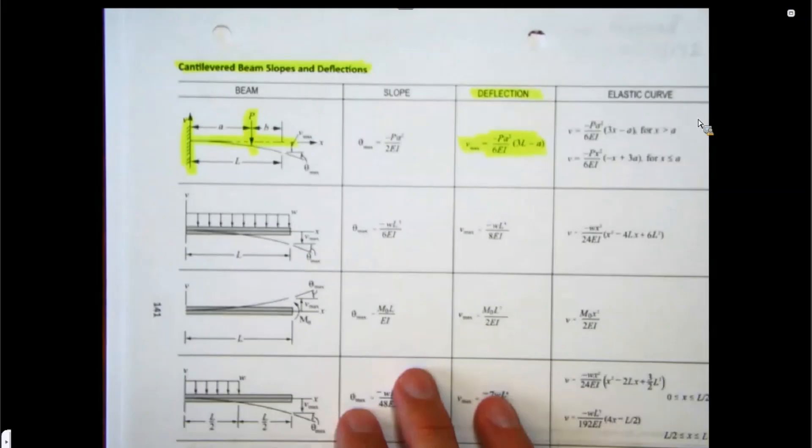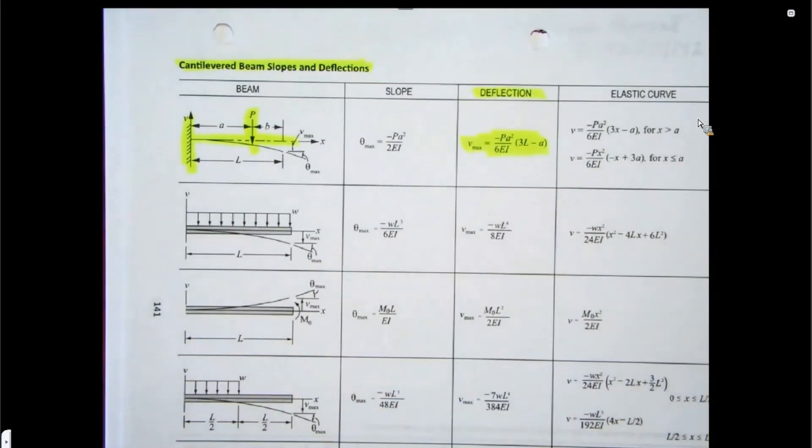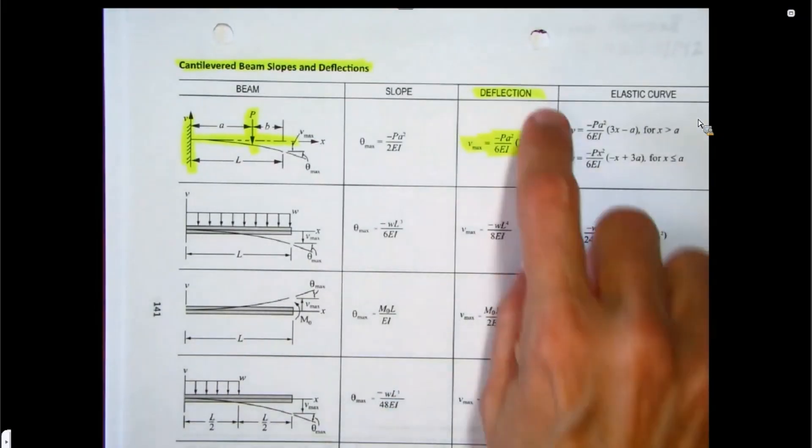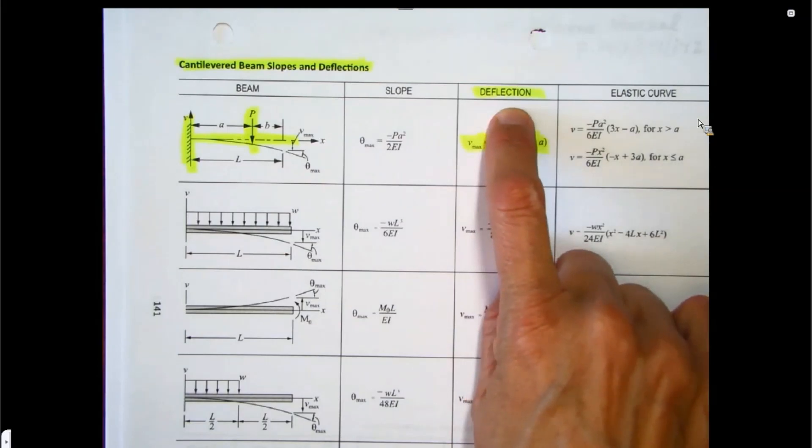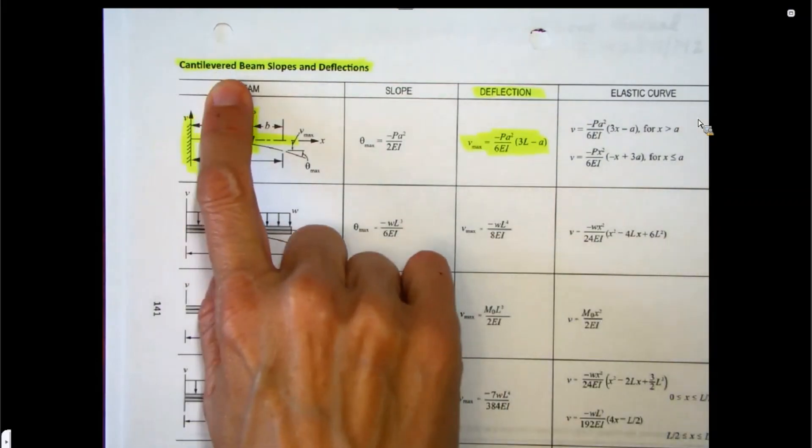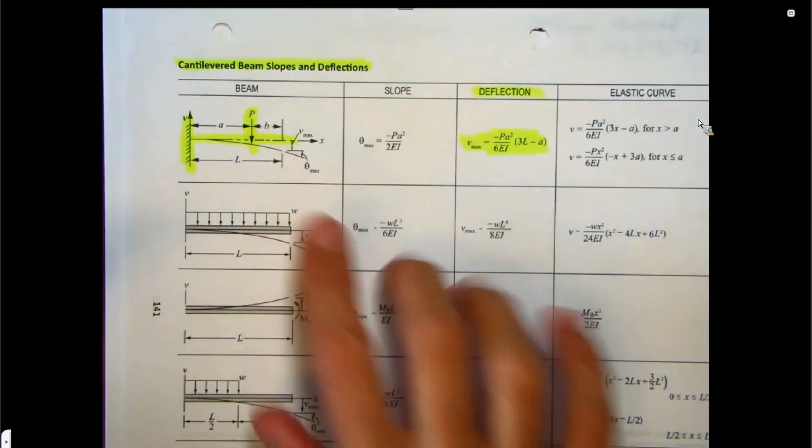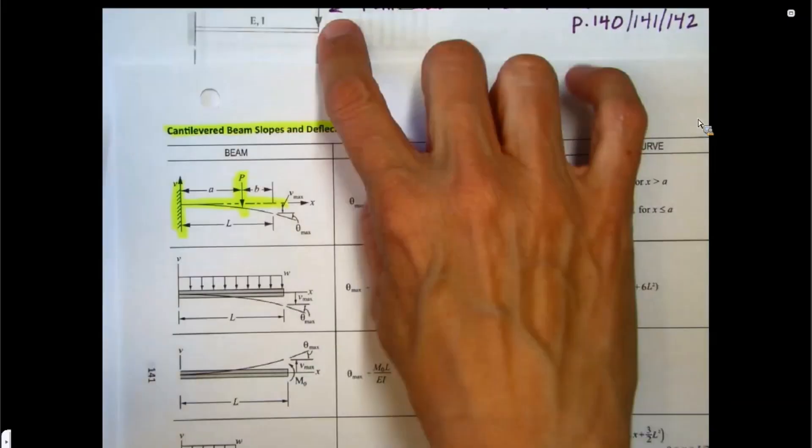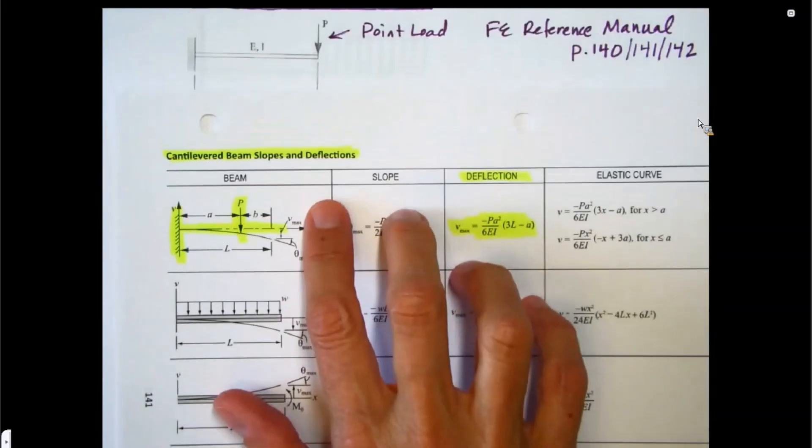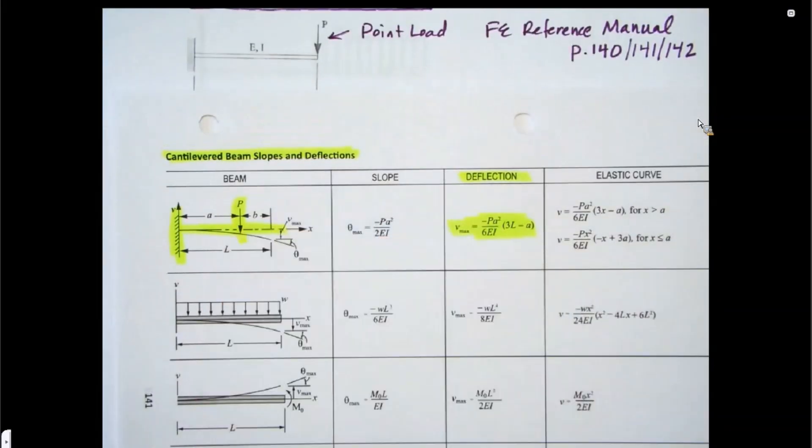Let's zoom in on this beam. How do I know to use this? Well, I'm being asked for deflection and it is a cantilever beam and it has a point load. Now, we take a look at this and say, well, that point load is not at the end, right? This point load's at the end. This point load is in a little bit from the end.